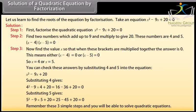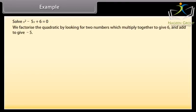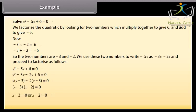Remember these three simple steps and you will be able to solve quadratic equations. Example: suppose we wish to solve x² − 5x + 6 = 0. We factorize by looking for two numbers which multiply to give 6 and add to give −5. Now (−3)(−2) = 6 and (−3) + (−2) = −5. So the two numbers are −3 and −2. We write −5x as −3x − 2x and factorize, giving (x − 3) = 0 or (x − 2) = 0, so x = 3 or x = 2. These are the two solutions.